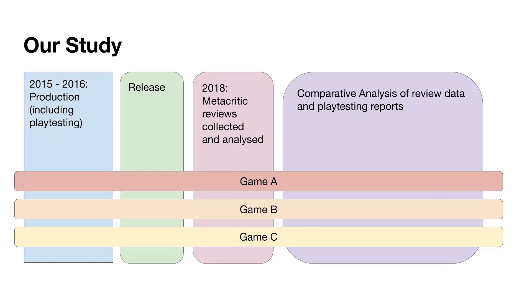The timeline was that production of the games, including playtesting, occurred around 2015 to 2016. The games were released, then a few years later we collected reviews, analyzed them, and coded them based on the features that reviewers commented on. We then did a comparative analysis to find some relationship between the features reviewers commented on and whether those features were identified as potentially problematic by the playtesting reports done during development.